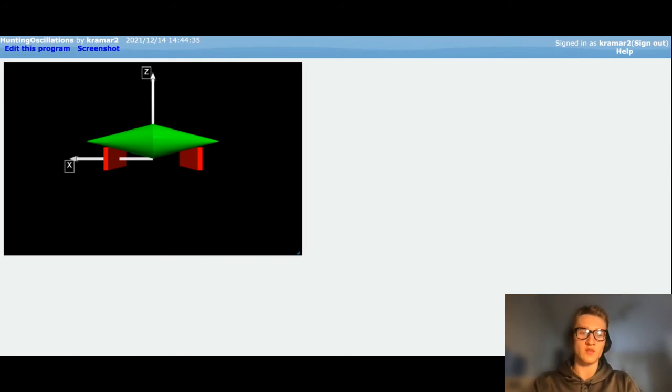For our analysis, we will approximate a single axle of train wheels as a double cone in contact with the rails at two points, with no friction, and the initial state of the system being the wheels sitting symmetrically on the tracks.